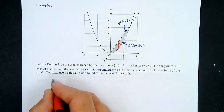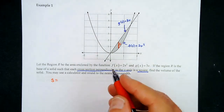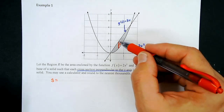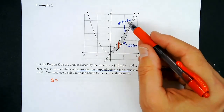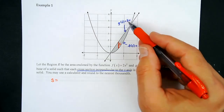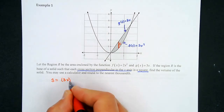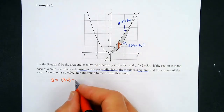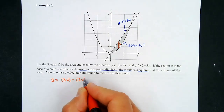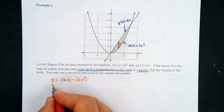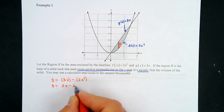To get the side s, we do top minus bottom to make sure s is positive. Our top curve is 3x minus our bottom, which is 2x². So the side becomes 3x − 2x².